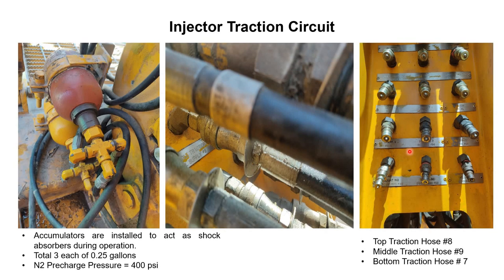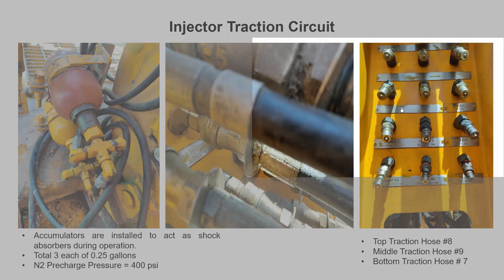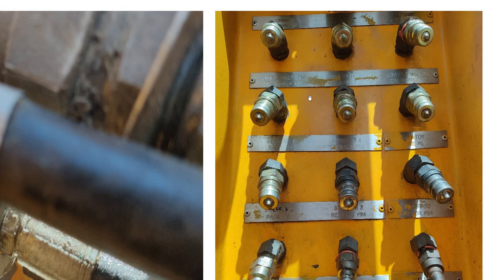Here we have the hose panel for the injector head. We can see the upper traction cylinder, middle traction cylinder, and the lower traction cylinder. The upper traction cylinder is hose number 9, the middle is number 8 or 9, and the lower is number 7.